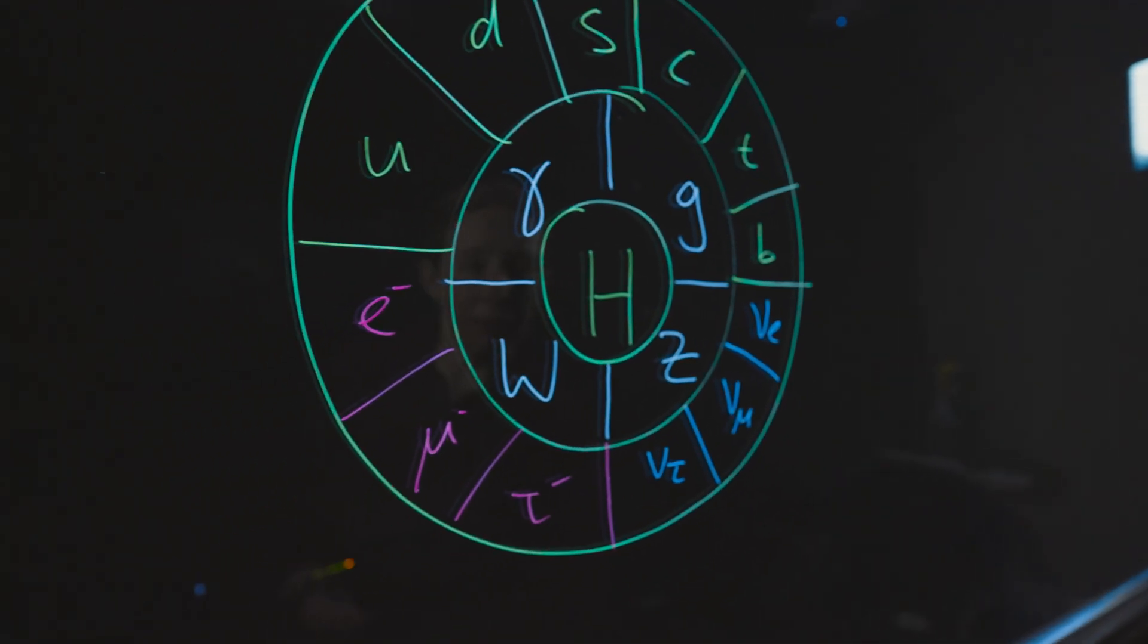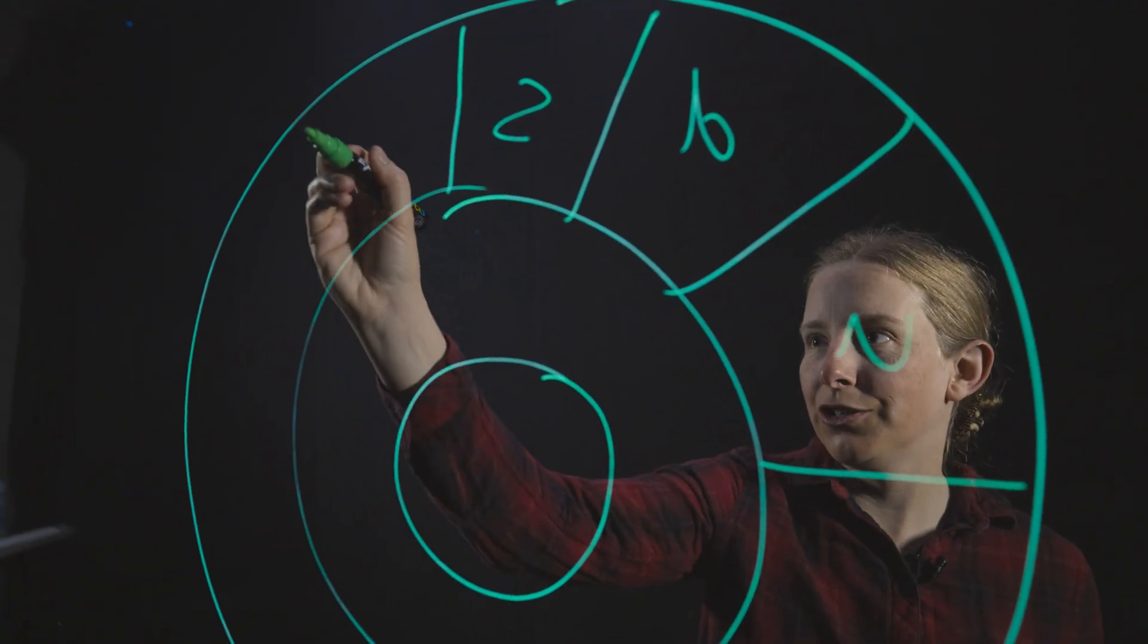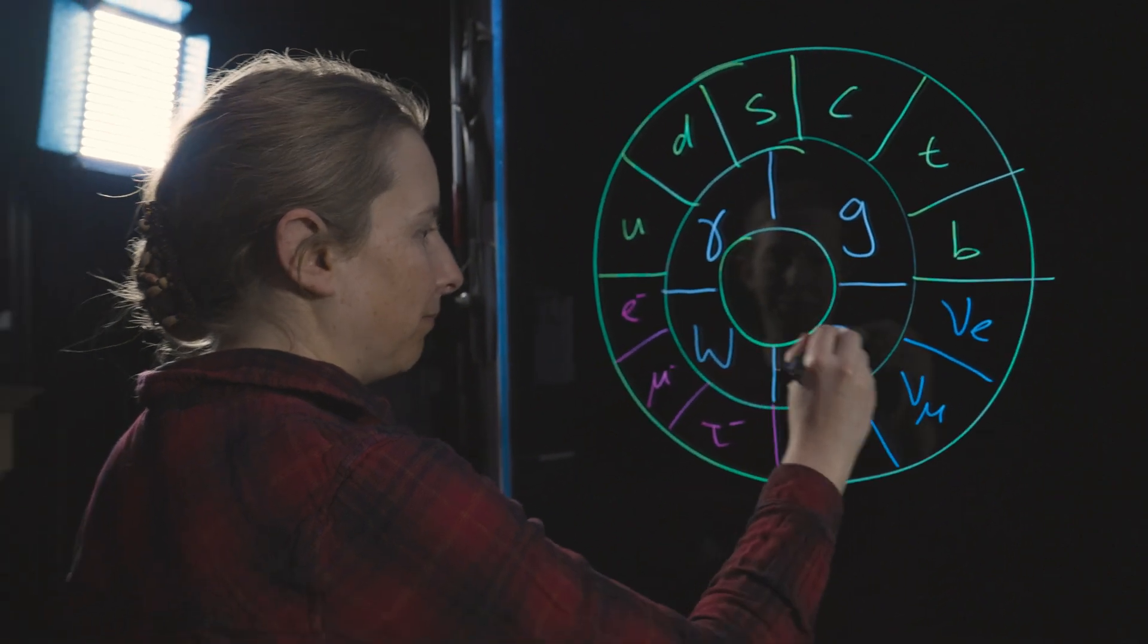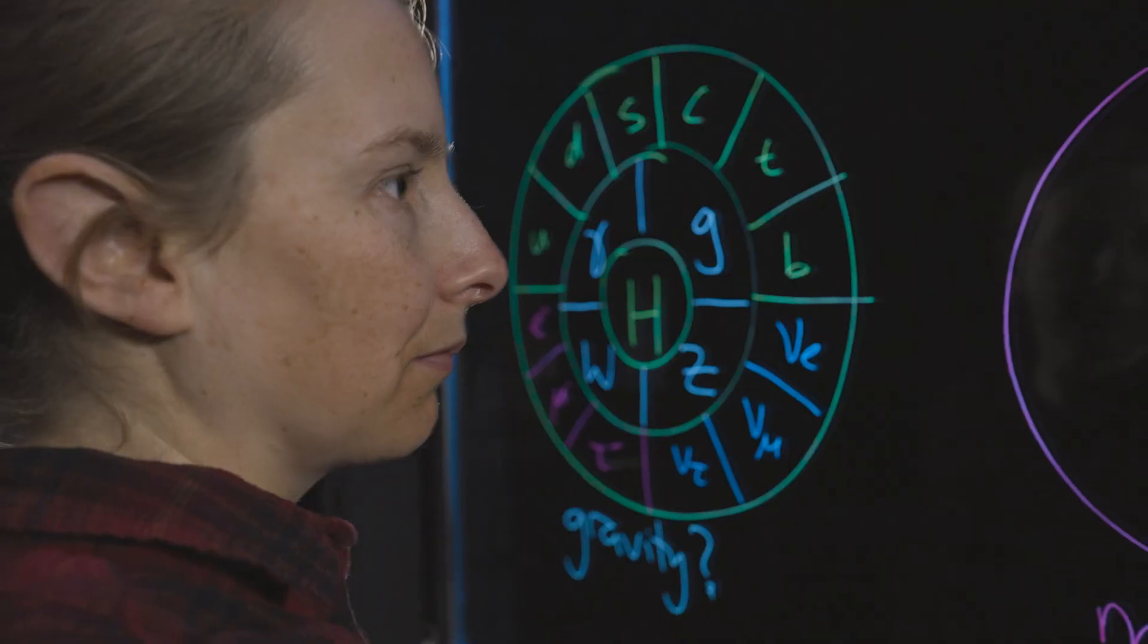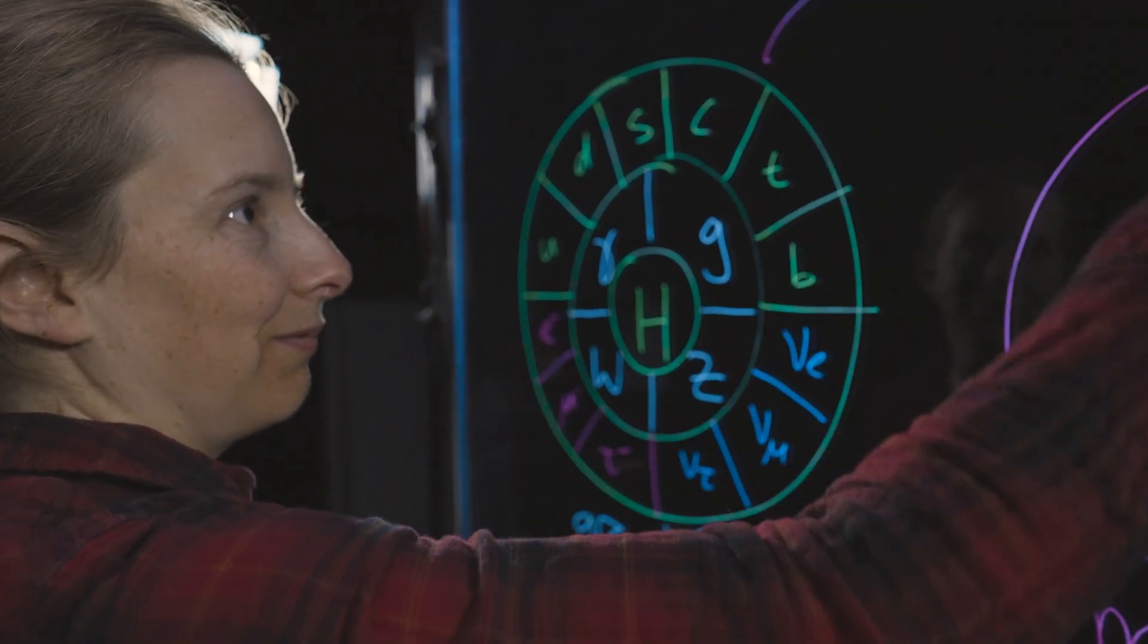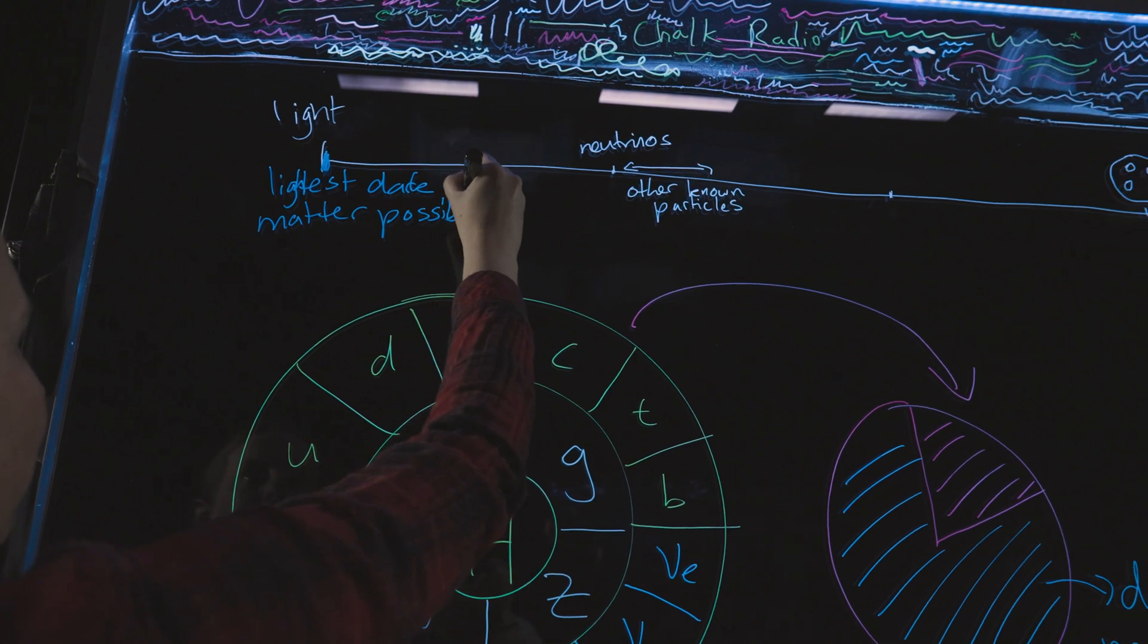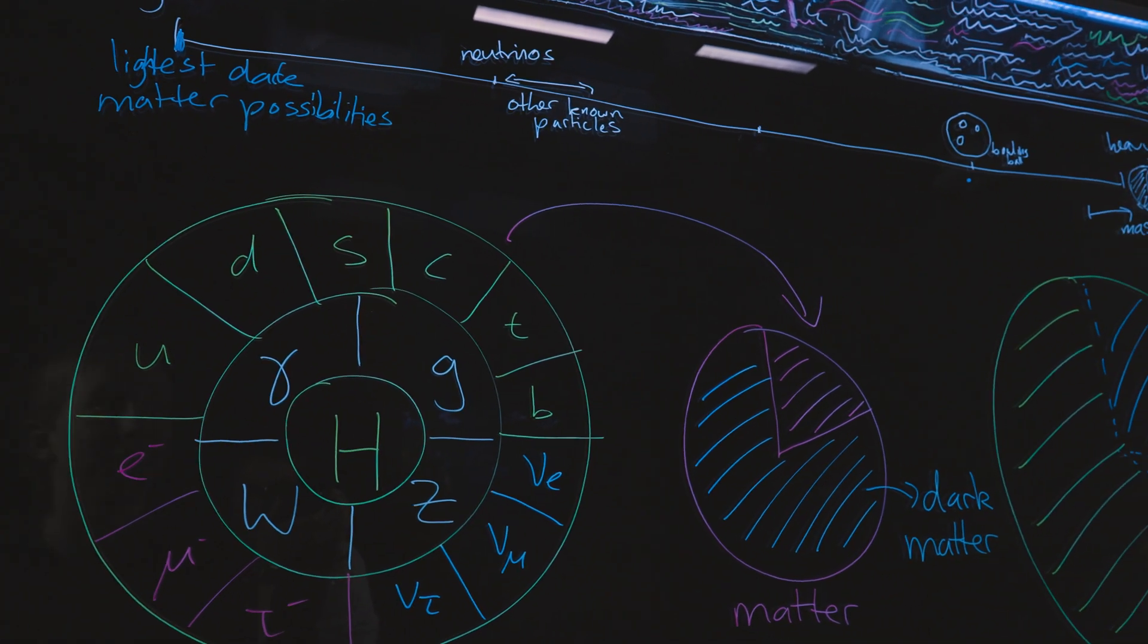So this is what's called the standard model of particle physics. It is the most precisely formulated physical theory that we've ever written down. However, there are holes in it. So for example, it doesn't describe why neutrinos have mass. It doesn't describe what dark matter is. And so theorists like to start with this underlying map, look for where there are holes in it, things it doesn't predict, and try to fix it.